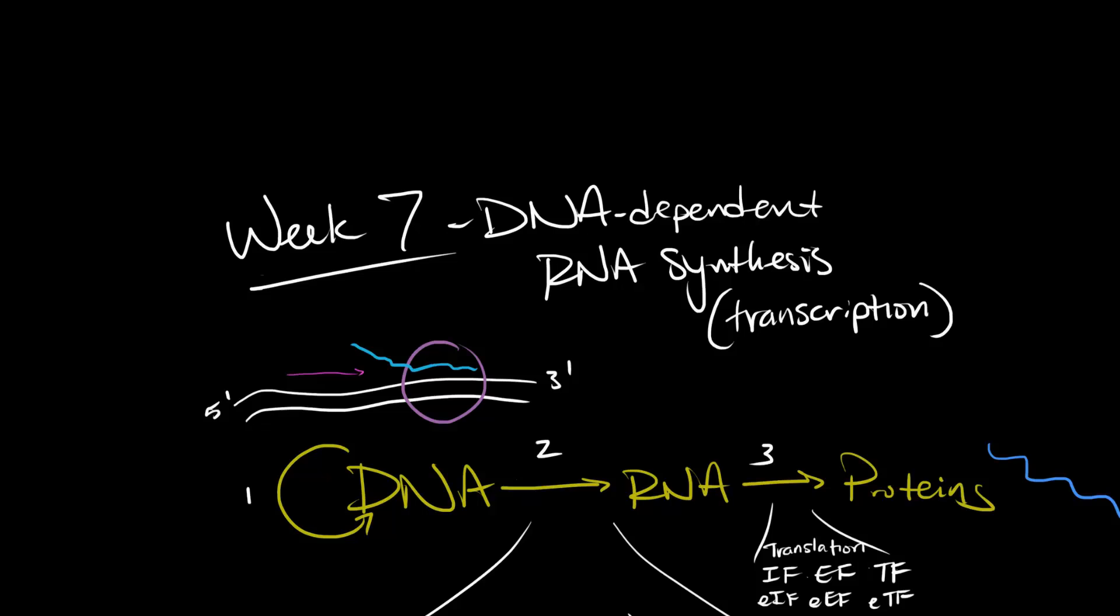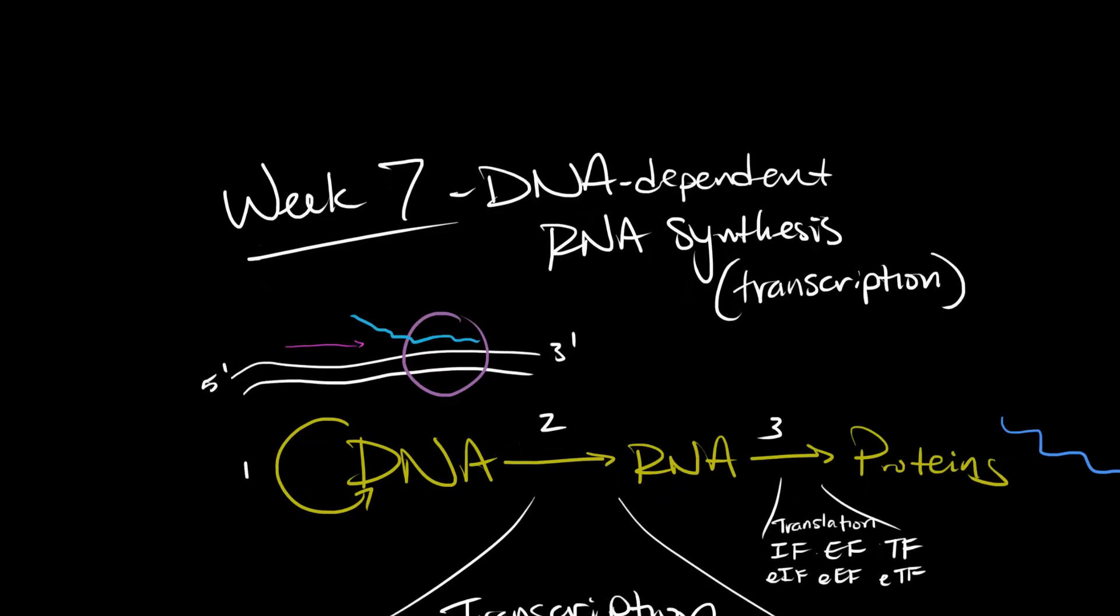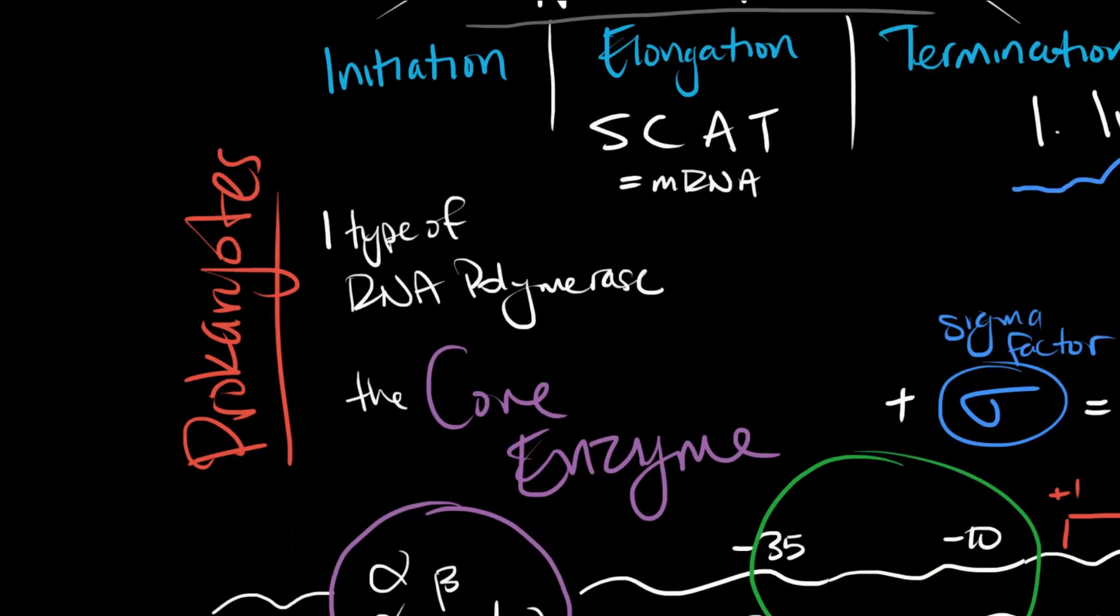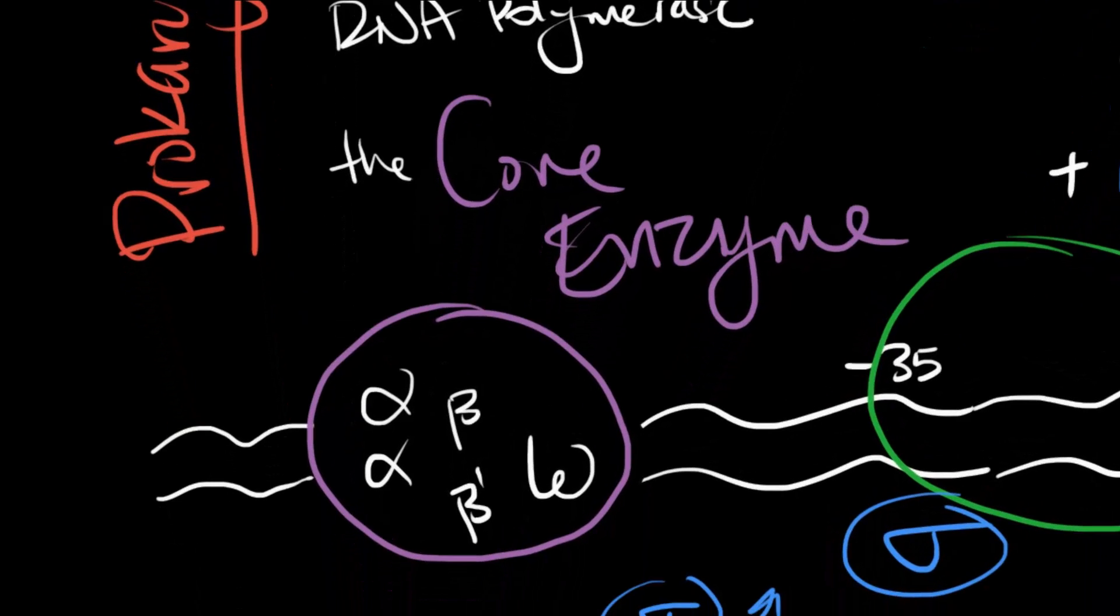So to start us off, I'm going to talk about prokaryotic transcription because it's more simple. With the scope of this class, here's what you need to know. Let's start by talking about initiation. Bacteria have one type of RNA polymerase. Depending on whether or not it's ready to transcribe and will transcribe, we give it another name. To start, the core enzyme scans the DNA looking for a place to transcribe. The core enzyme is made up of five subunits: two alpha, a beta, beta prime, and omega.